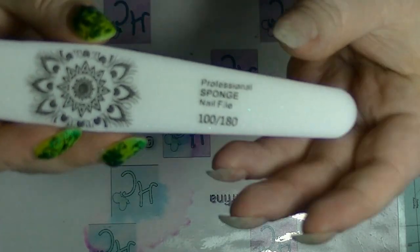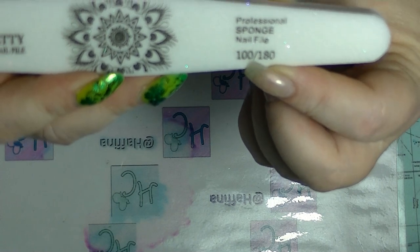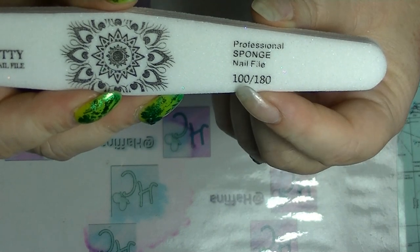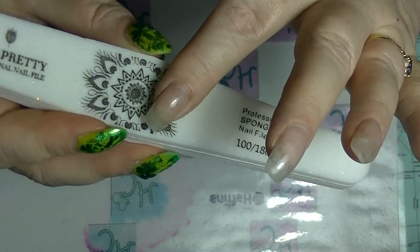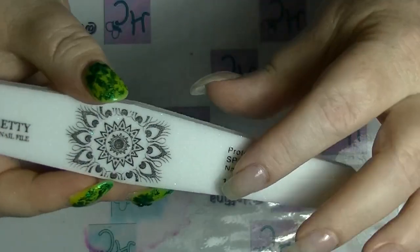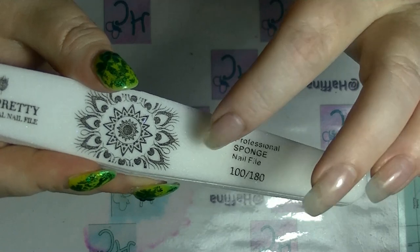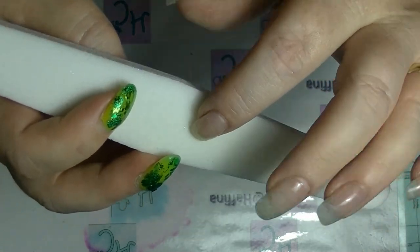You can see on here it tells you the grit number. So on one side it is 100 and on the other it is 180. Just by running my finger over it, I can tell you that this is the 100 side and this is the 180 side.